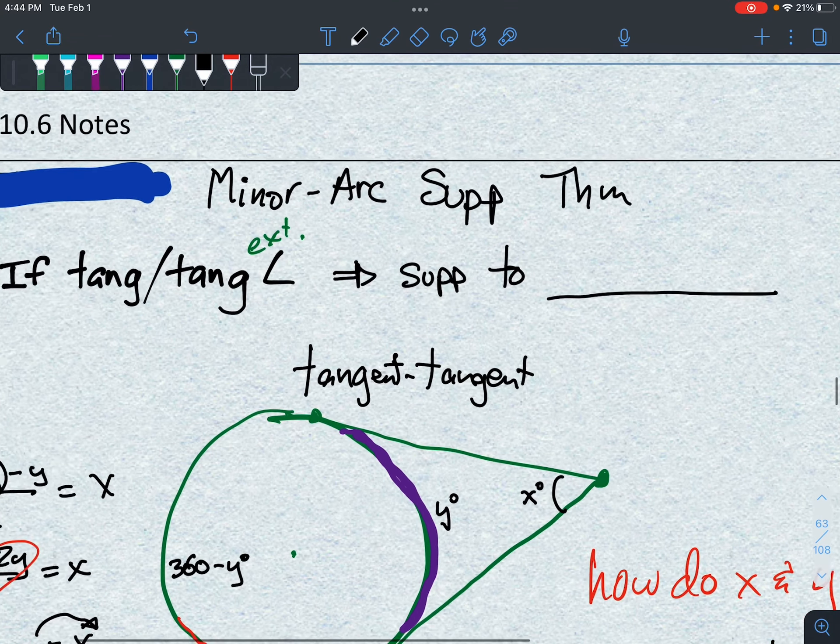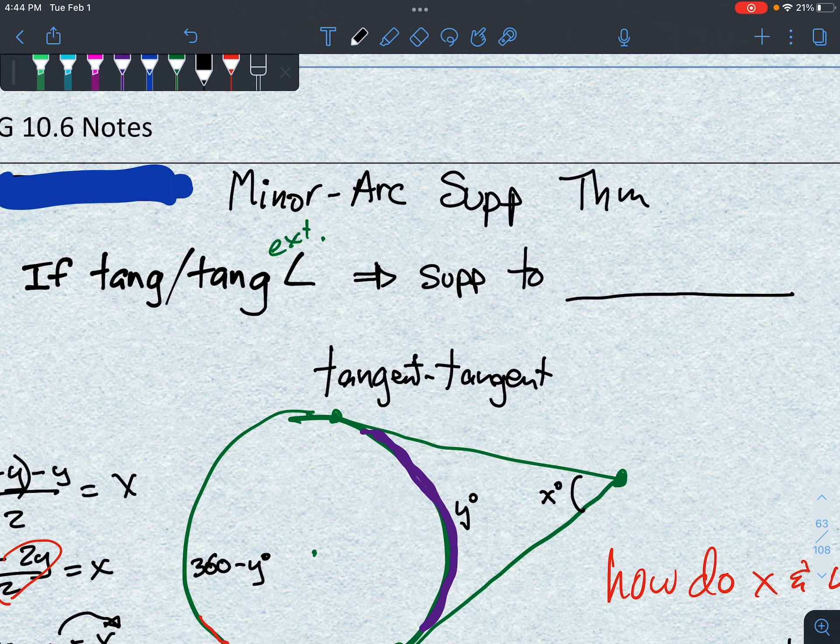So in the tangent, if it's a tangent-tangent exterior angle, it's supplementary to what we call the minor arc that's intercepted.